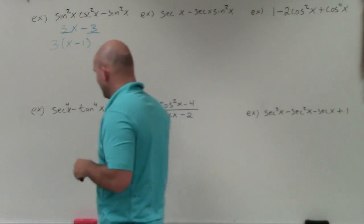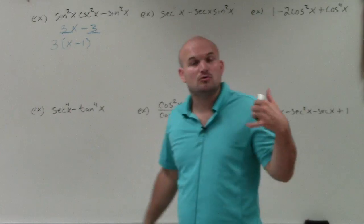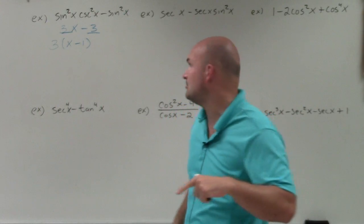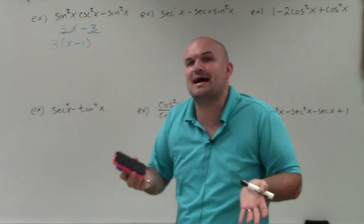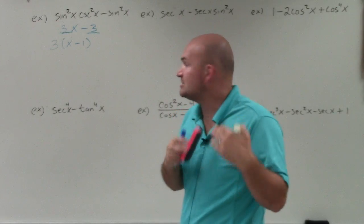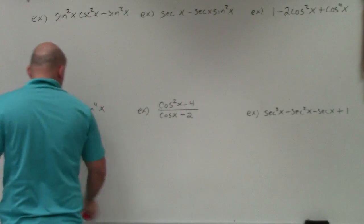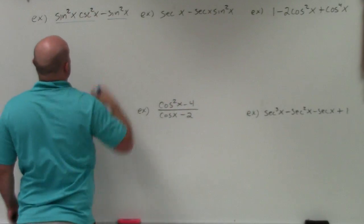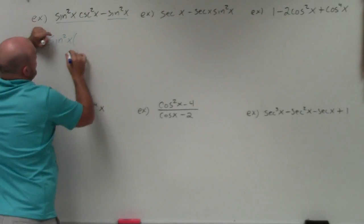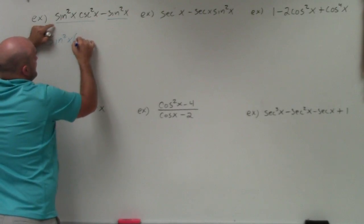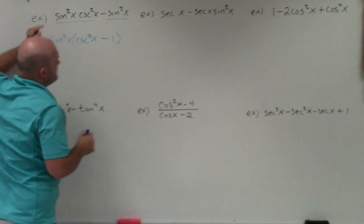You can pick arbitrary numbers — I just picked 3, you could pick y or 10, it doesn't matter. The point is to remember your factoring skills. Looking at the original expression, both terms have sine squared in common. So if I factor out sine squared of x, I'm left with cosecant squared of x minus 1. Whenever you see squareds, always think of your Pythagorean identities.